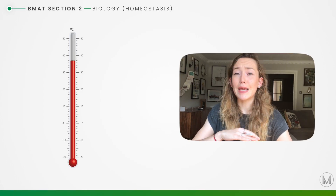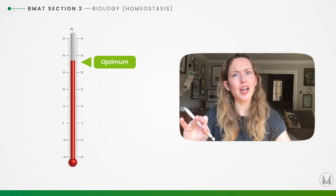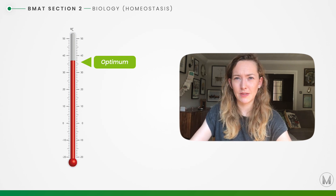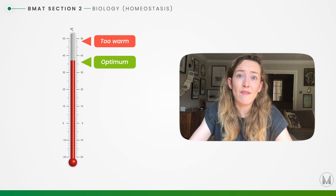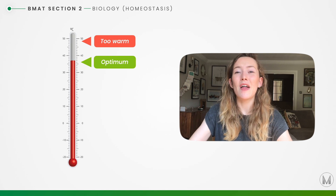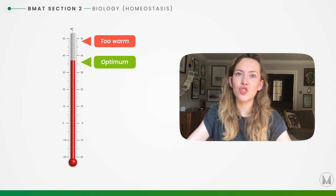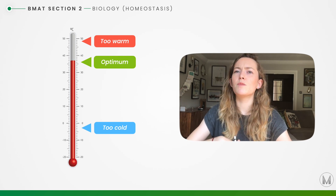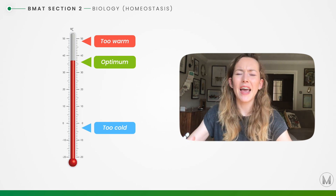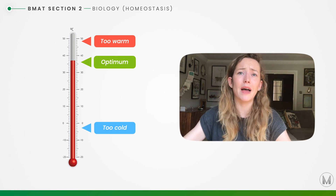Why is it important to keep a constant body temperature? It's essential to maintain our body temperature very close to 37 degrees Celsius — the optimum for humans. Deviating even a small amount is dangerous: if we become too warm, enzymes get denatured and stop working. If we get too cold, our enzymes work too slowly and reactions happen too slowly, which can dramatically affect organ functioning. So homeostasis must maintain body temperature in a very narrow band around 37 degrees Celsius.